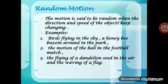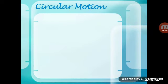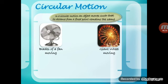Random motion is when the direction and speed of an object keep changing continuously. For example, a bird flying in the air moves according to its own will — it doesn't travel only in a fixed straight direction. A honeybee buzzing around in a park moves wherever it wishes. Flying of a dandelion seed in the air or waving a flag are also examples of random motion.